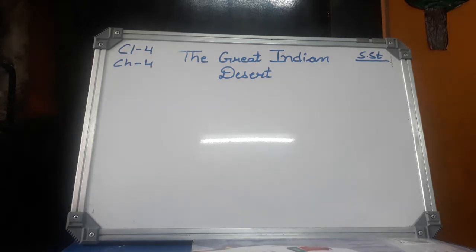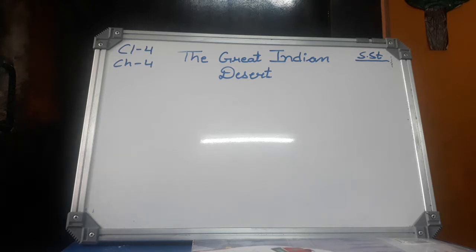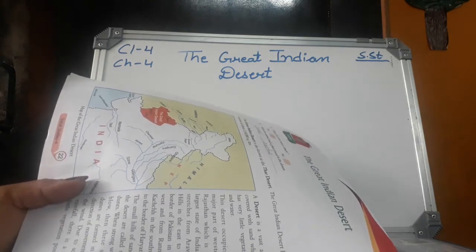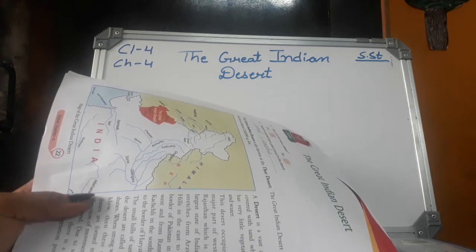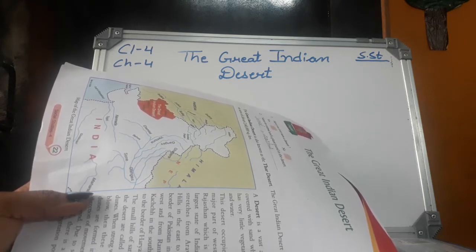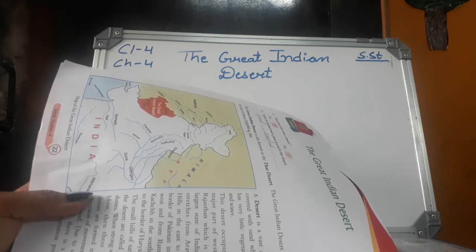See in your chapter — the Great Indian Desert is also known as the Thar Desert. The Great Indian Desert has an area of about 260,000 square kilometers. A desert is a vast area covered with sand which has very little vegetation and water. This desert occupies a major part of western Rajasthan, which is the largest state of India. It stretches from the Aravli hills in the east to the border of Pakistan in the west, and from the Rann of Kutch in the southwest to the border of Haryana.